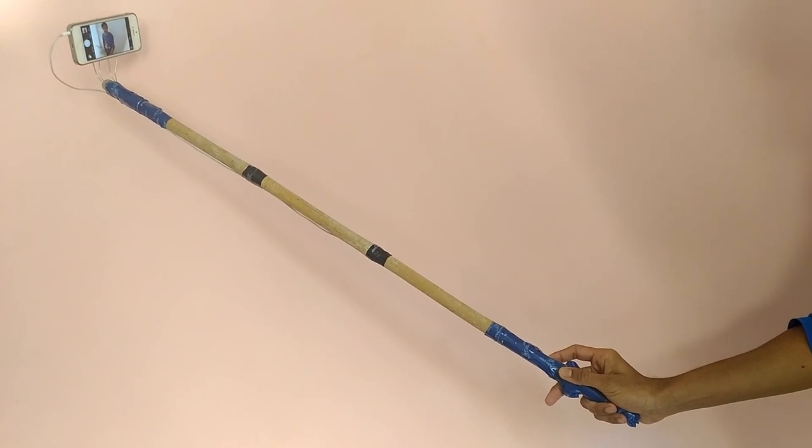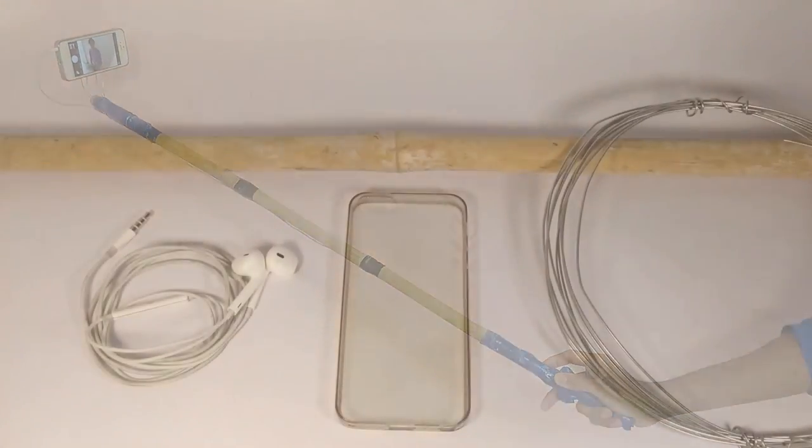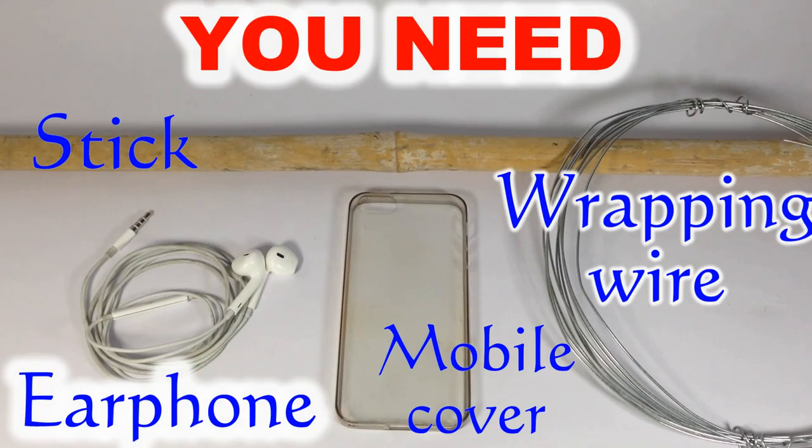Hello, welcome to Indian Lifehacker. Today we are going to make a selfie stick. For that you need a stick, earphone, mobile cover, and wrapping wire.